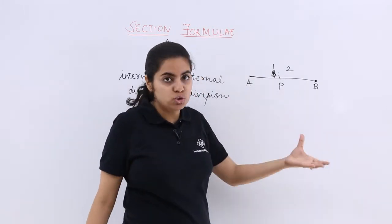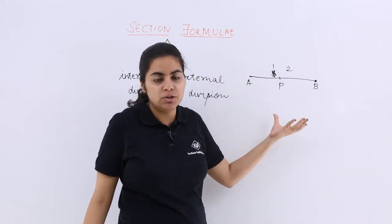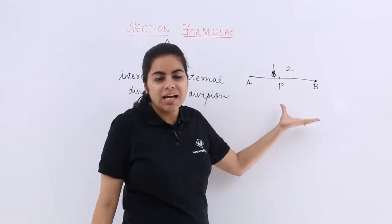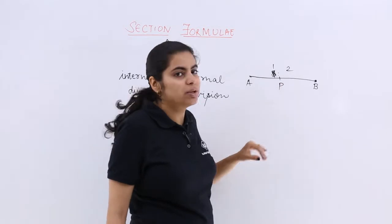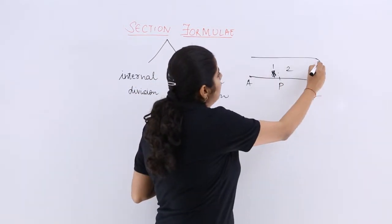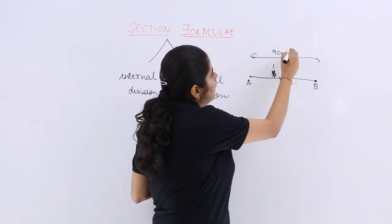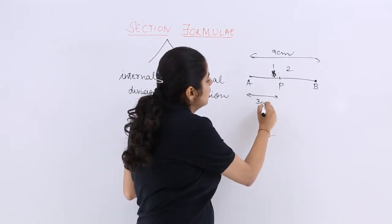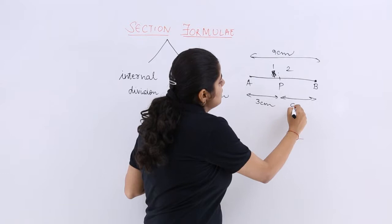Now if 1 is to 2 is the ratio given in front of you and you have to divide the given line segment in the ratio 1 is to 2 by the point P, and the whole line is of 9 cm, definitely my dear friends you will agree that this is your 3 cm and this is your 6 cm.